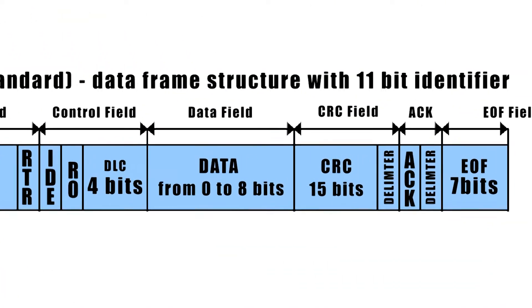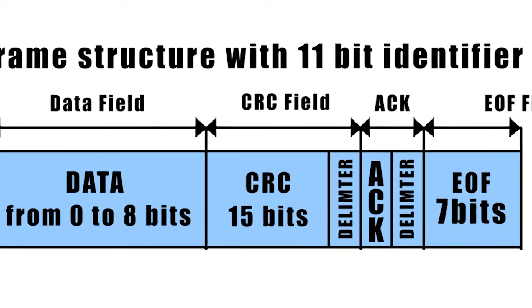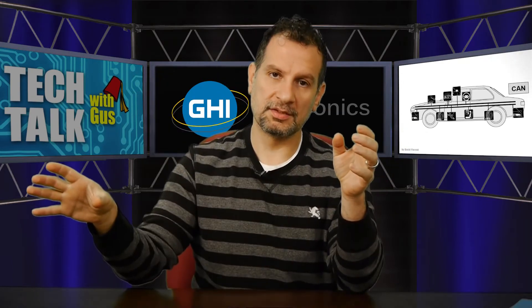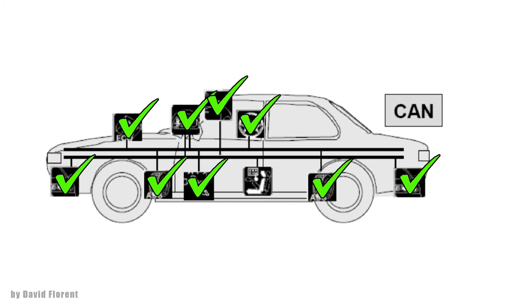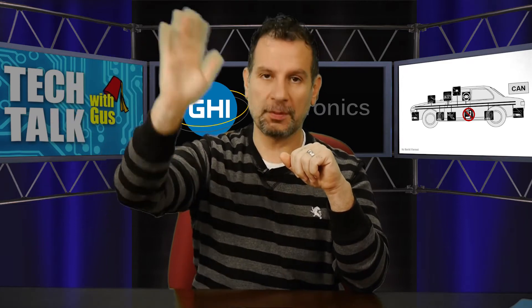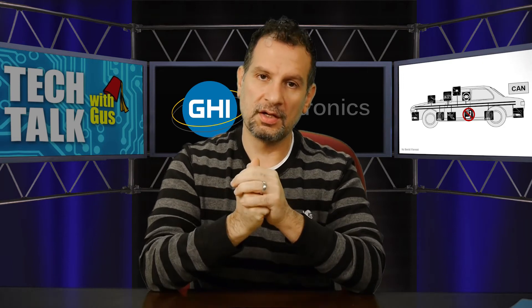Last thing: in CAN, there is a 15-bit CRC at the end of each message, which guarantees the message was received correctly. The transmitter sends the arbitration ID, 8 bytes of data, and then the CRC, which is checked by all receivers. They acknowledge it's good. If one receiver says no, this is not good — retransmit — then the transmitter has to retransmit the message, and all other receivers discard their old copy and try to receive the new message.